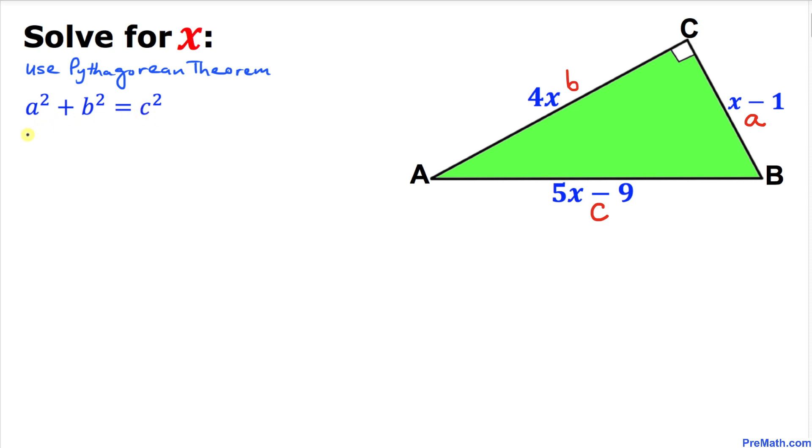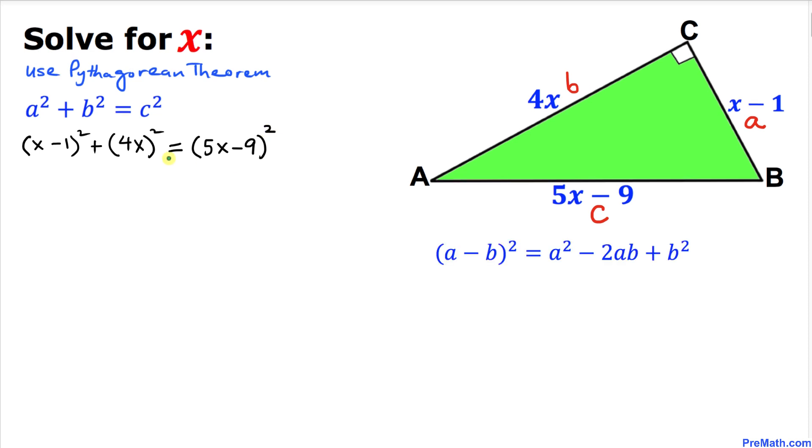In our case, a is x minus 1, and I'm going to square it. Then b in our case is 4x, squared, equals c, which in our case is 5x minus 9, and then squared.